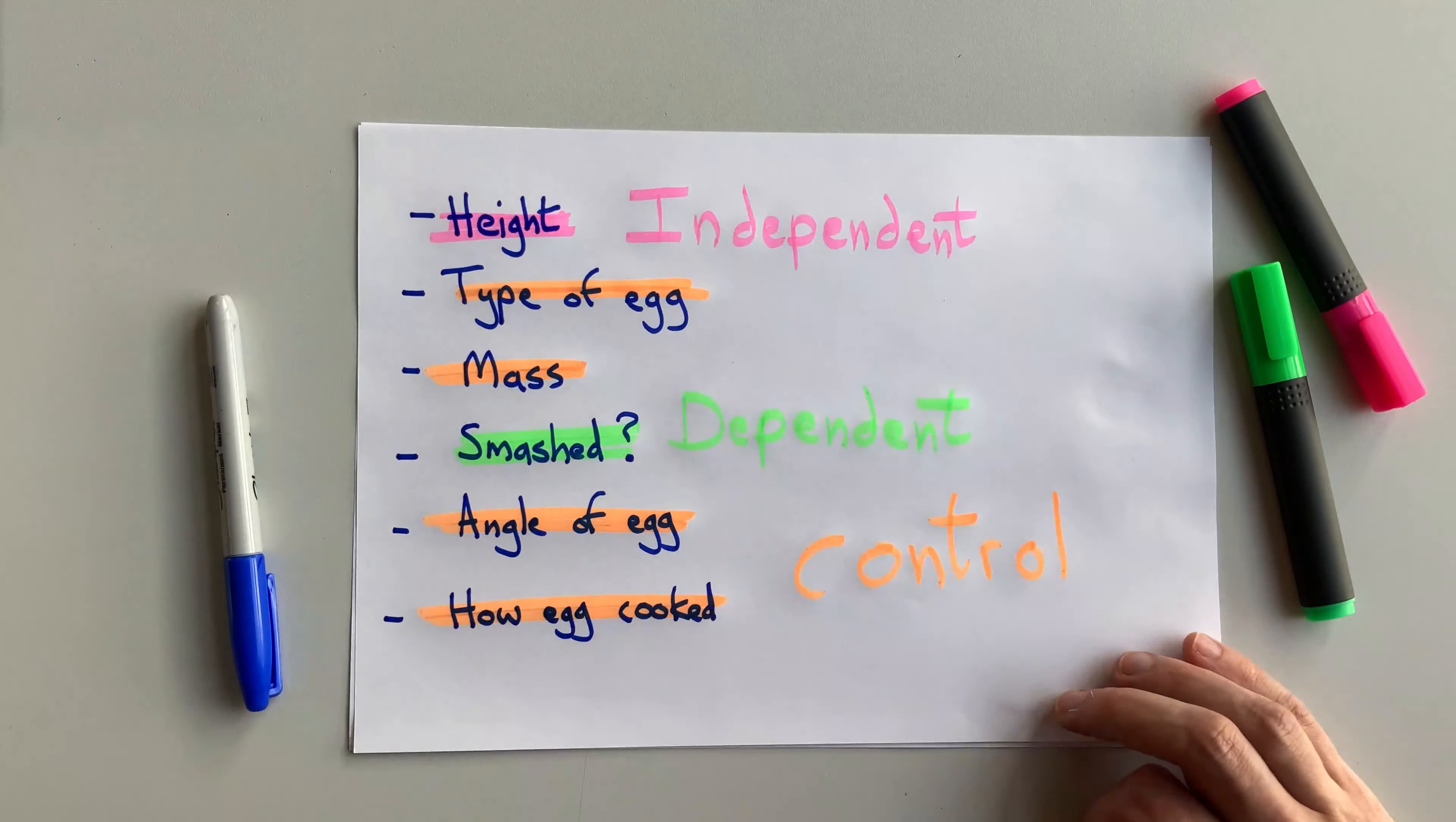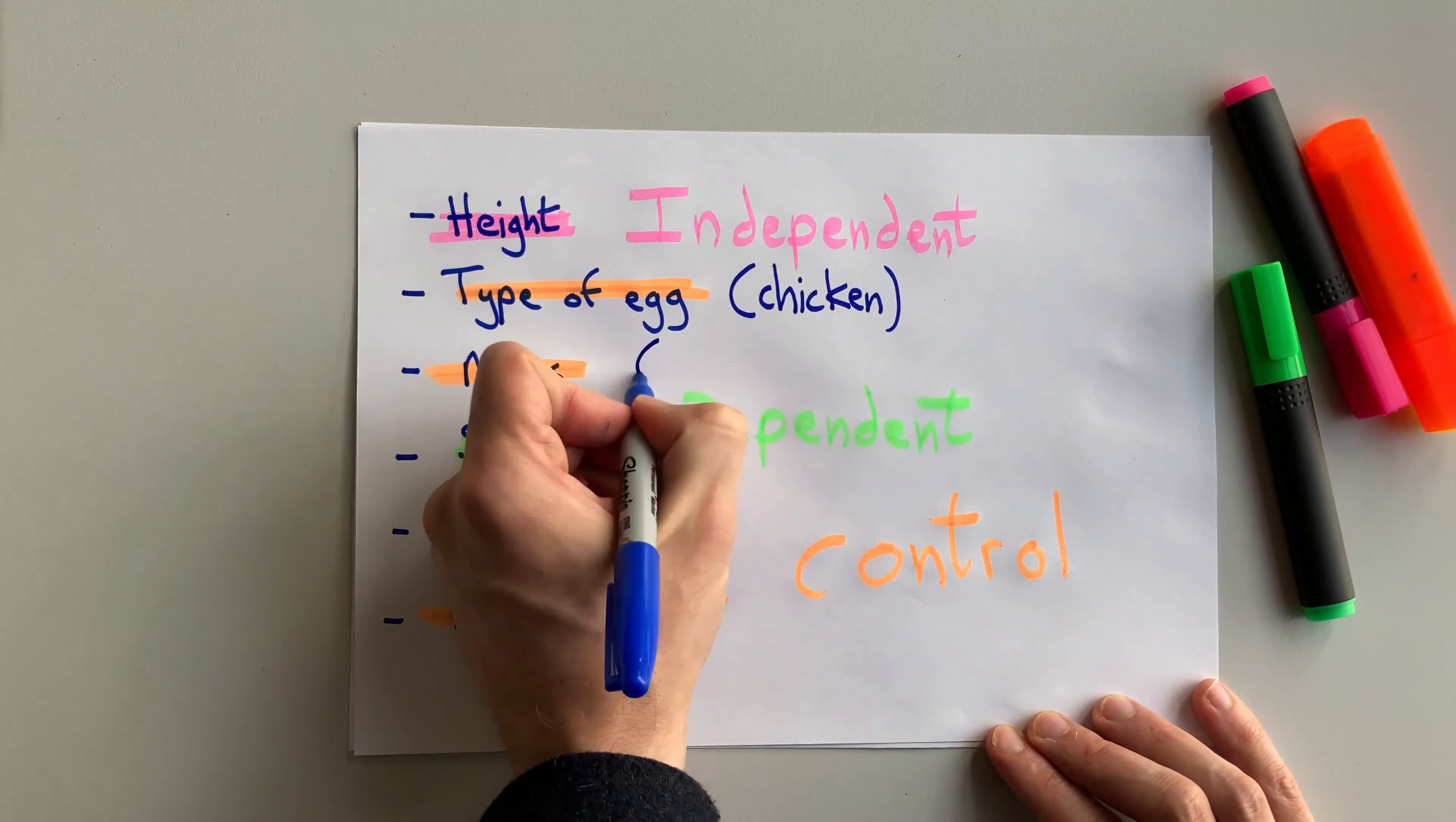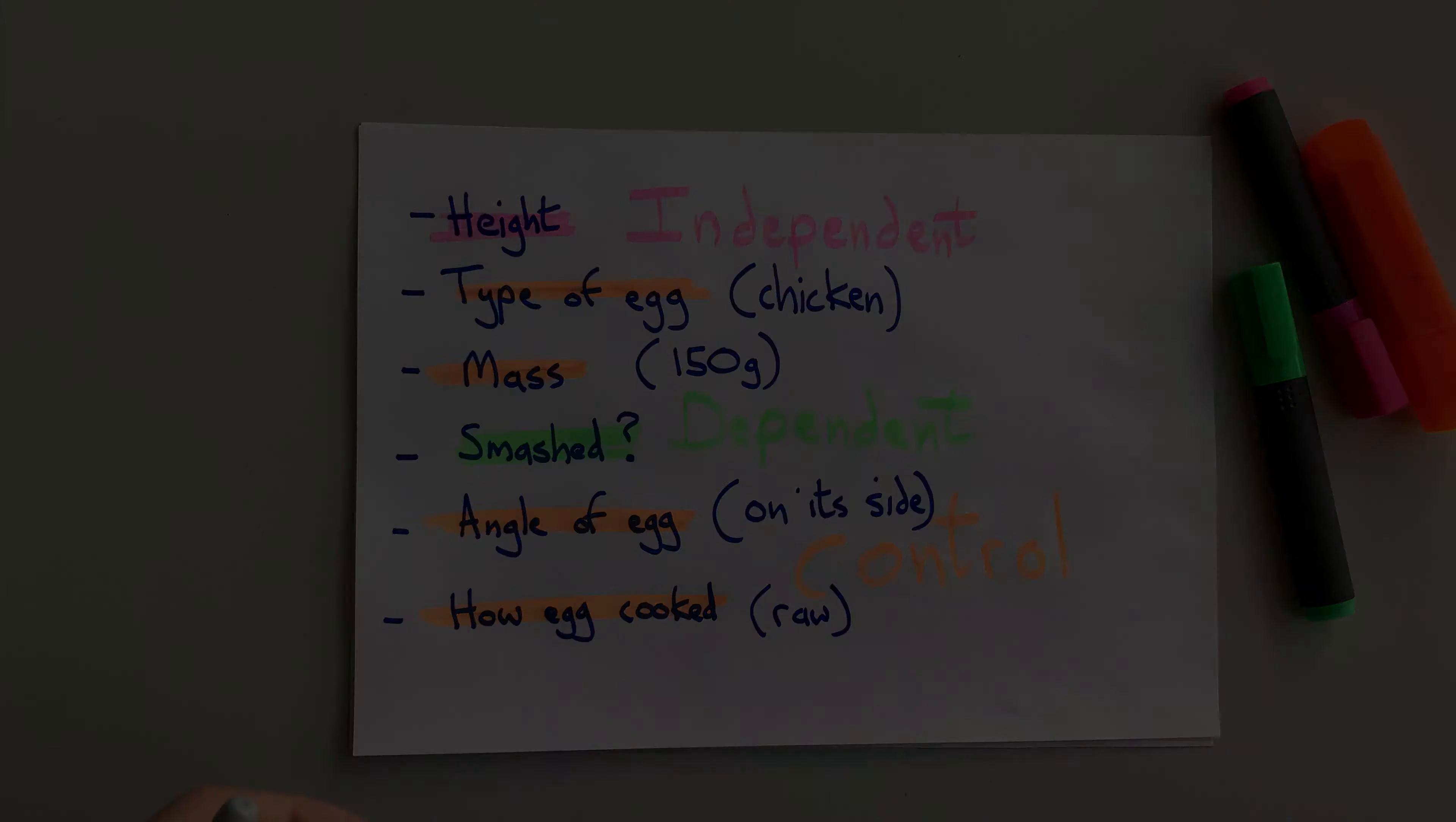To summarise, anything that can change is called a variable. The one you put in beforehand is your independent variable. The one that you measure as your results is the dependent variable. And everything kept the same to make it fair is a control variable.